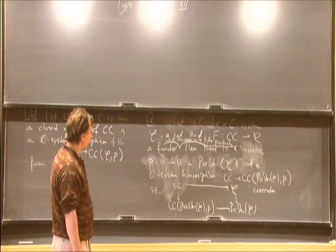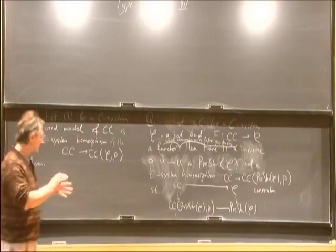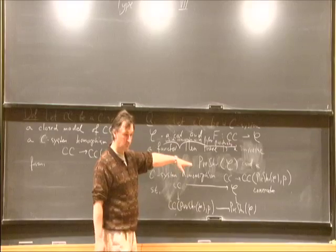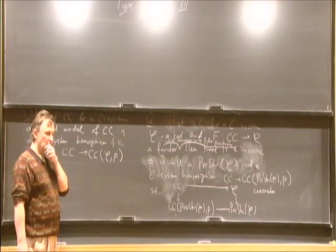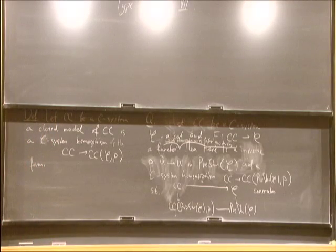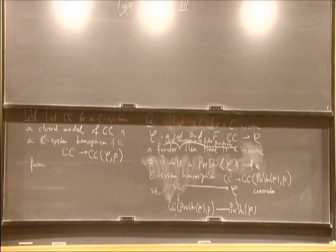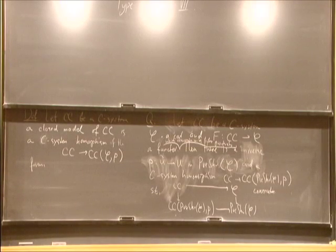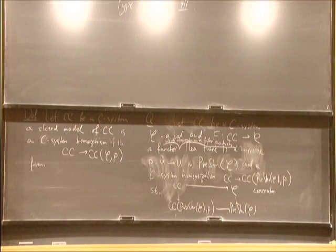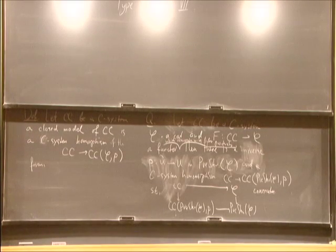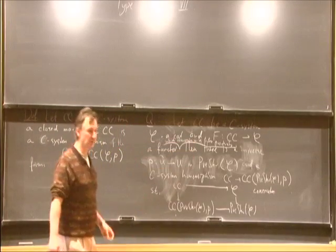I tried to do something like extension along F, but some things didn't converge because there is also an issue of how one chooses the universe. I don't know what the complexity of this conjecture is, and I don't know whether it's true or not — maybe one can invent a counterexample. But it is in a sense an extension of this theorem, because this theorem says any C-system can be obtained from a universe, and the next step would be to say that any category-theoretic model can be lifted to a C-system model.